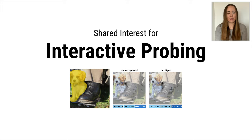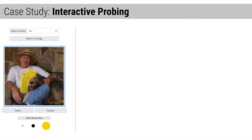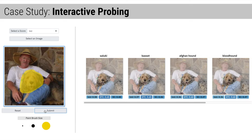In this setting, we pre-compute saliency for all classes a model is trained on and interactively specify a ground truth region. Then, using the Shared Interest metrics, we uncover the classes with the highest alignment to that region. Here, for example, we set the ground truth to be the dog's face, and the interface returns the classes with the highest IOU coverage to that region. The returned classes are types of dogs, and the saliency for each class is focused on the dog, indicating the model has learned generalizable visual features of dogs.